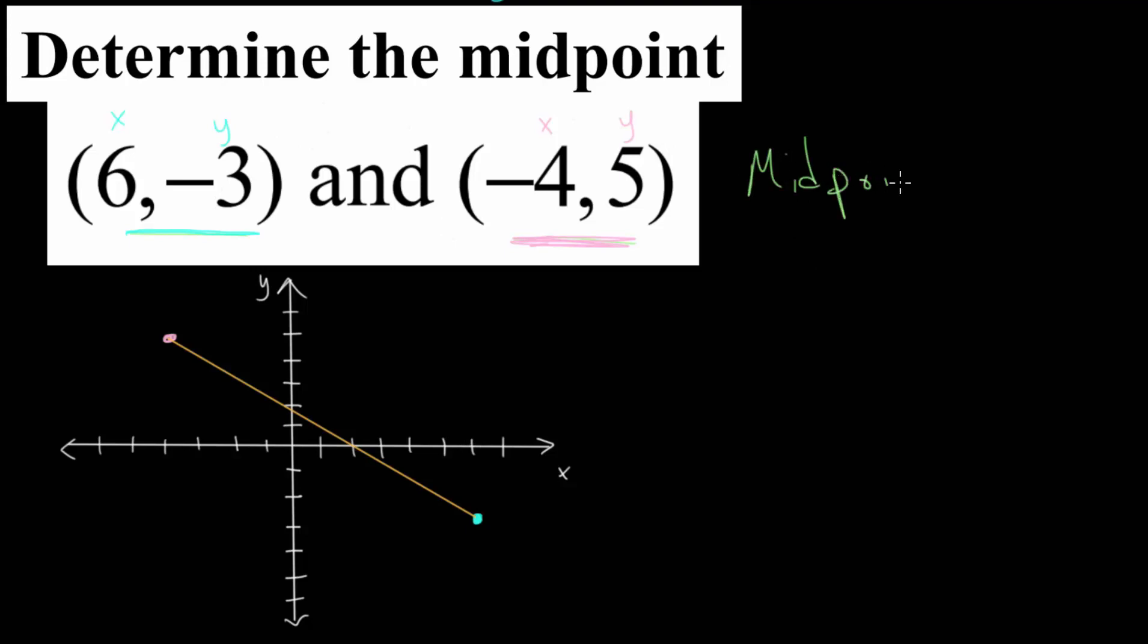So we can develop a formula here. Let's say we have two points, x1, y1, and x2, y2. The midpoint of these two points here would be the average of the x-values and the average of the y-values.